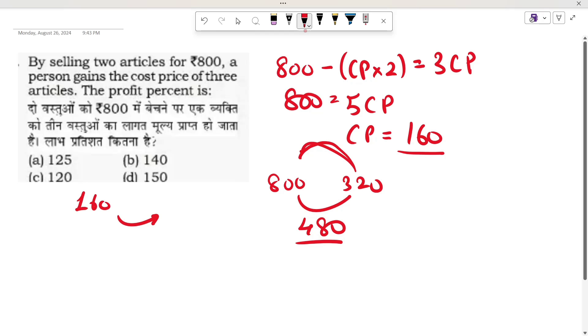I'm earning 240 rupees on one article. The profit percent is 240 divided by 160, which is 150 percent. That is option number D.